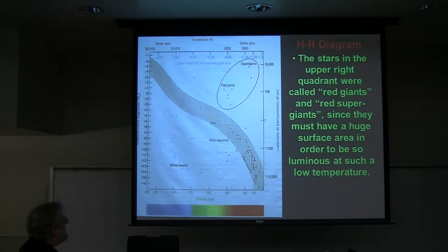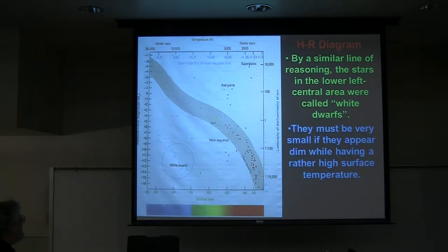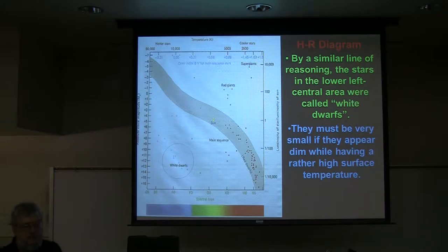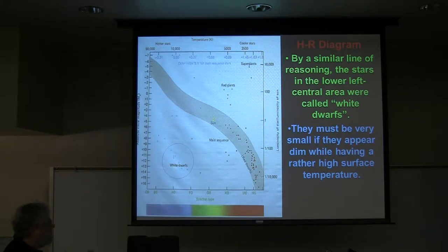The stars in the upper right corner were low temperature, just like the red dwarfs, but they were very luminous because they were huge — called red giants or red supergiants. By the same line of reasoning, the ones down at the lower left were white hot or even blue hot, yet they were not very luminous at all because they had to be very small. Despite their high temperature, their luminosity is about one-thousandth that of the sun. Those are the white dwarf stars.